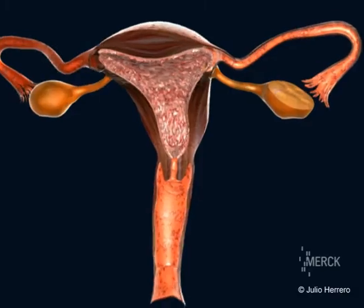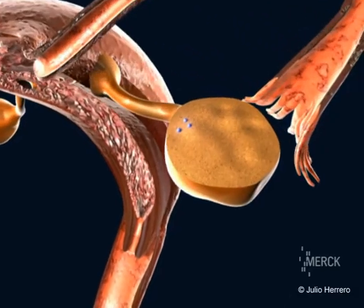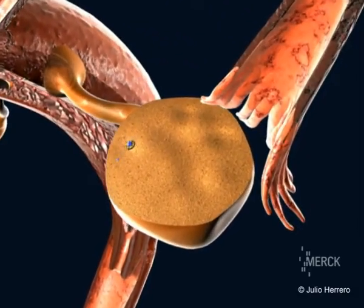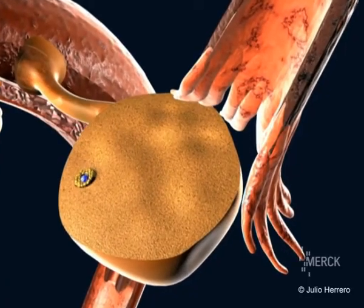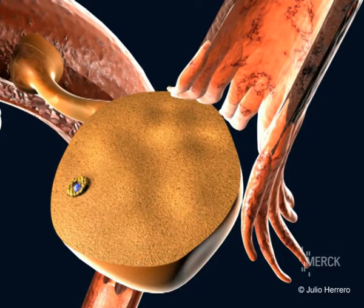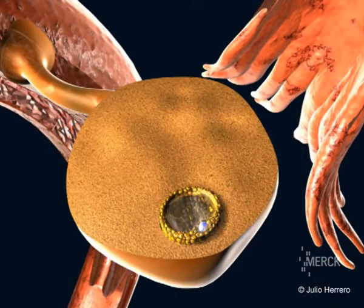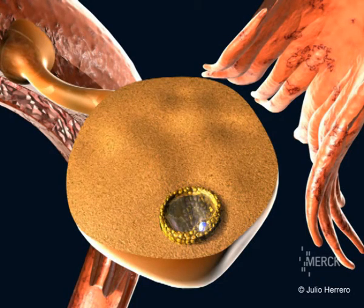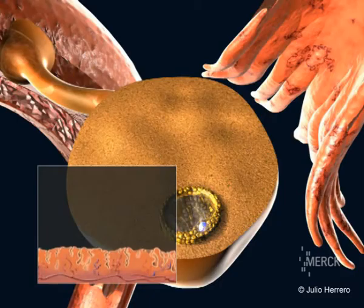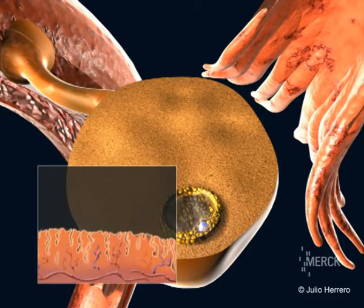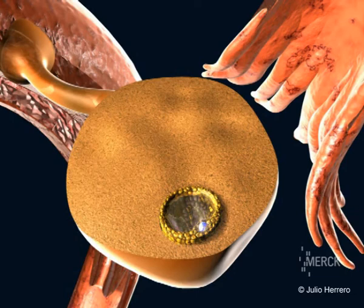At the start of the menstrual cycle, a cohort of follicles starts to grow, but generally only one continues to develop. This follicle is referred to as the dominant follicle. In its interior, the follicle contains an immature oocyte. This follicle increases in size by one to two millimeters per day. The follicle produces estrogen and causes the lining of the uterus, the endometrium, to thicken. Around day 12 to 14 of the cycle, the follicle has grown to the size of about 21 millimeters.